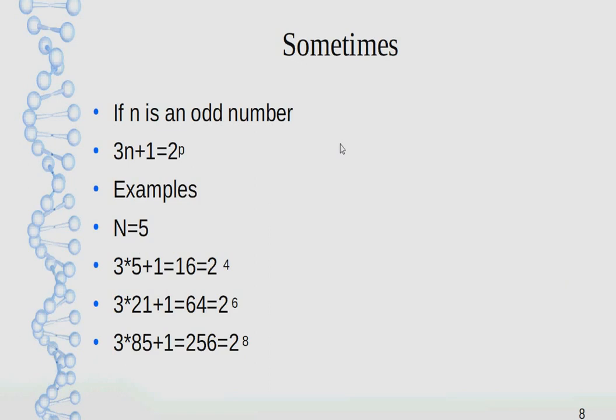Sometimes, if n is an odd number, 3n+1 is going to give you a power of 2. Examples: for n equals 5, for n equals 21, or for n equals 85.